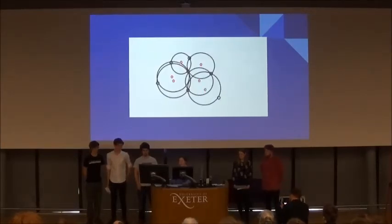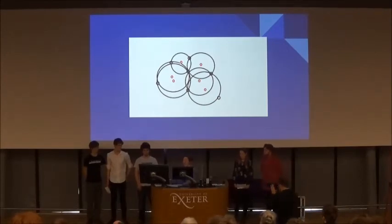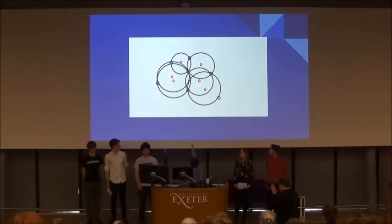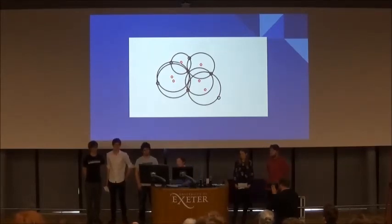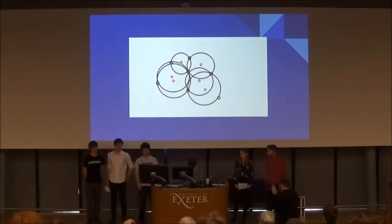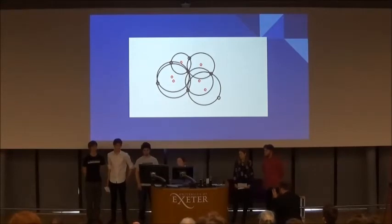Now, if we add the centers of the circles in, from that you can get a Voronoi diagram, where each one of these points — the red ones — represents a vertex, or corner, of the Delaunay triangulation.